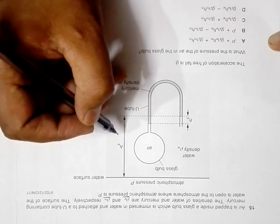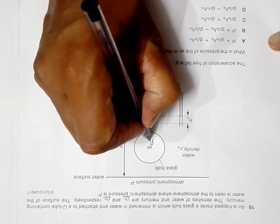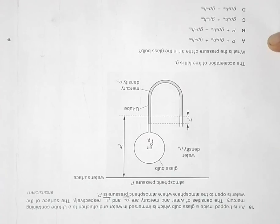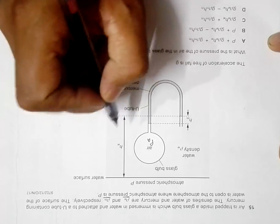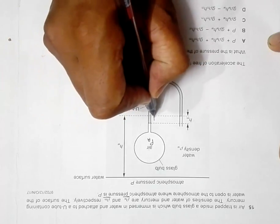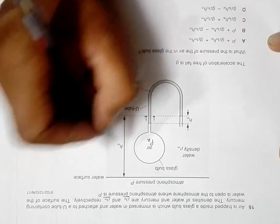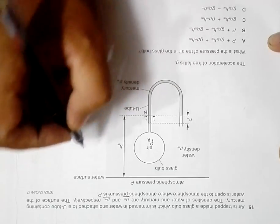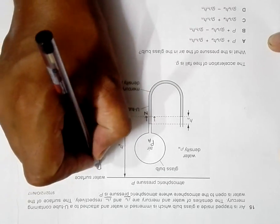The atmospheric pressure is P and the acceleration of free fall is g. So we have to find the pressure of air in the glass bulb. Let us say this is Pa, the pressure of air. If you look here, let us first calculate the pressure at this point. So the pressure at this point, let us say it is point N, the pressure at point N.